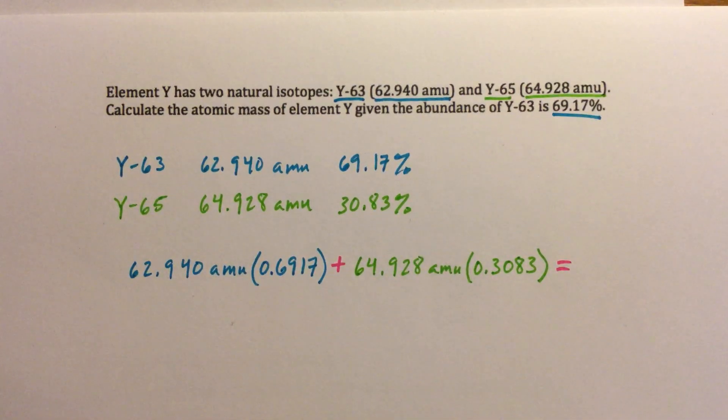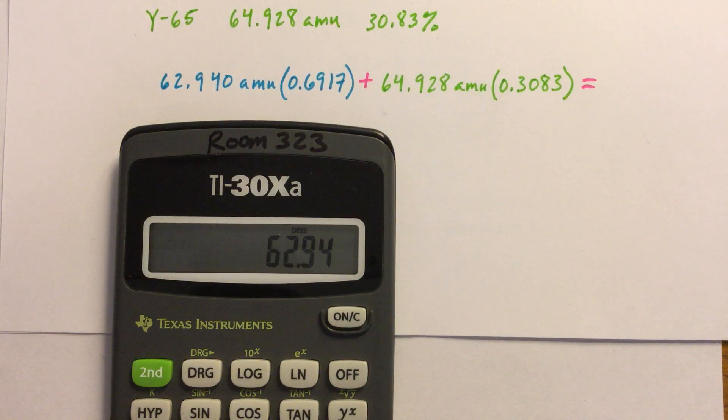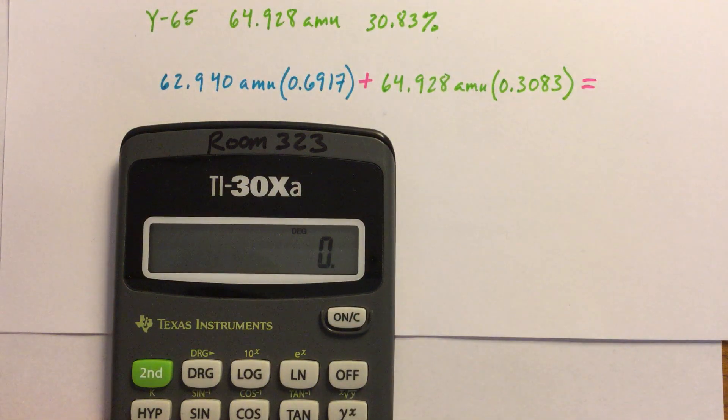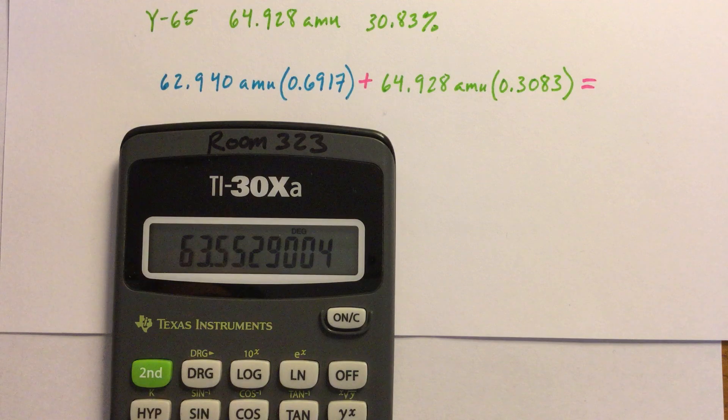So now we type this into our calculator. So we do 62.940, the error doesn't really matter for your calculator, times, remember we can just type this all in as one, and you should do it that way. 0.6917 plus 64.928 times 0.3083 equals this number.